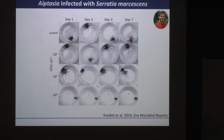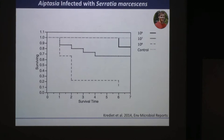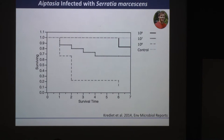From these experiments we can quantify this using Kaplan-Meier survival analysis. We see basically 100% mortality at the highest concentration, and ultimately arrived at a lethal dose of 50% at about 5 × 10^7 CFU/mL, which is on the order of what we see from infected corals — that's a concentration we typically see when isolating from an infected colony.